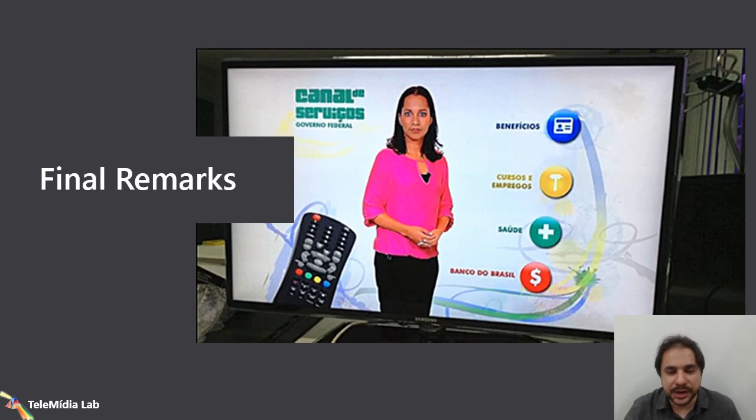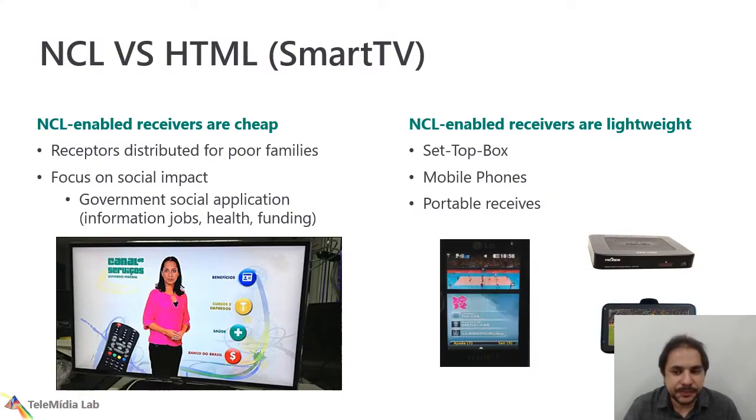So, my final remarks now. A first important mention that we must talk is about NCL versus HTML. That's a common language used in Smart TV. NCL receivers are much more cheaper than Smart TV. For instance, here in Brazil, there is some receptor that was distributed with a low cost for poor families, doing the switch-off of analog sign-in to digital sign-in. An important feature in these distributed receivers is that they have some social impact applications, when governments develop applications about information for jobs, health, and funding for these poor families. Moreover, NCL is lightweight, and can be embedded in different types of devices, like mobile phones, portable devices, and set-top boxes.